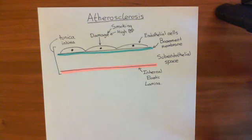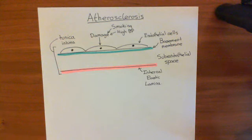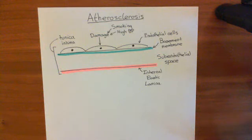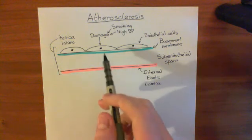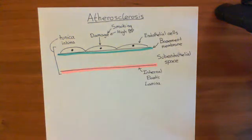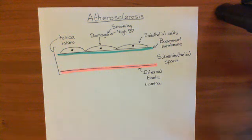When endothelial cells get damaged, they start an automated program that all cells have — an alarm system. If they're receiving foul chemicals, what they assume is that some horrible pathogen, some bacteria, is releasing these chemicals nearby. So the cell thinks something dangerous is nearby and sets off the inflammatory process, calling in inflammatory cells under the belief that it is calling in the troops to fight an infection.